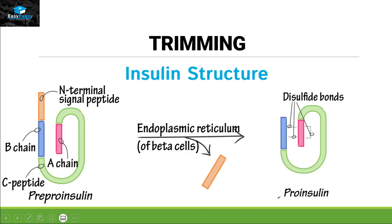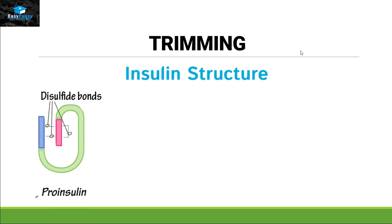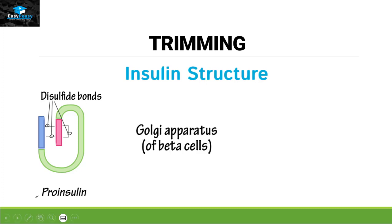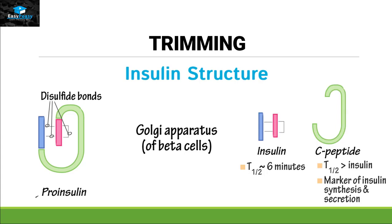Now the protein is called pro-insulin and it no longer has the signal sequence. Still, this protein is inactive because it is not insulin yet — it is pro-insulin. The process of trimming will be further done on this protein and the attachment of disulfide bonds will occur. In the Golgi apparatus, trimming will be completed and active insulin will be released to perform its function, while the C-peptide will get degraded after some time. So insulin is a perfect example of trimming.